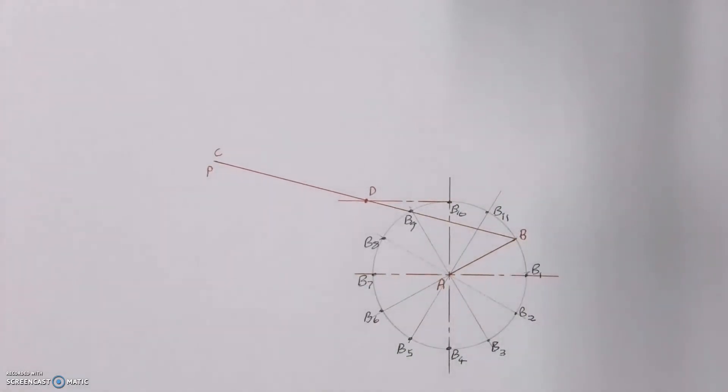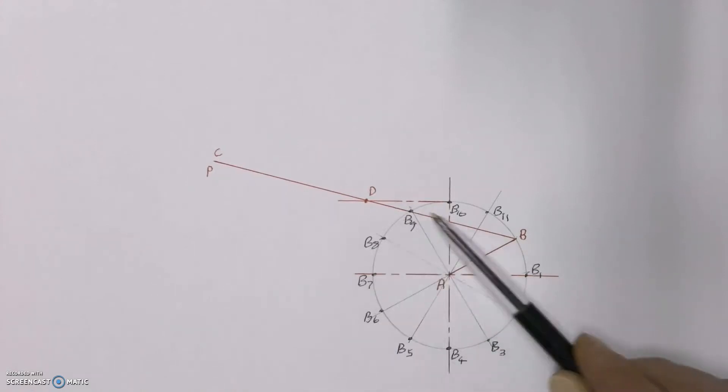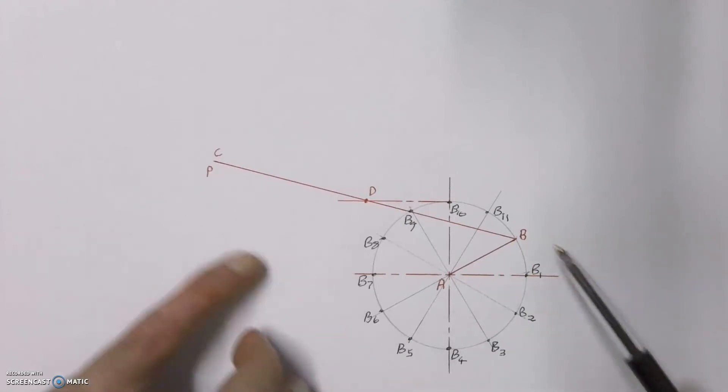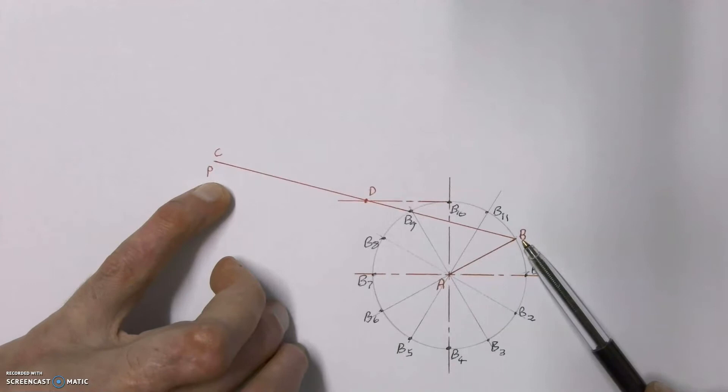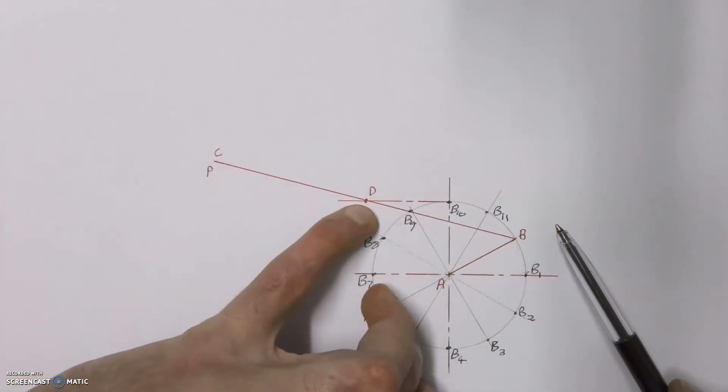That completes 12 positions for arm AB as that arm moves around point A. Now we know that connected to each of those positions of point B is an arm BC, and we know that every single one of these arms BC has to pass through point D, our slotted link.